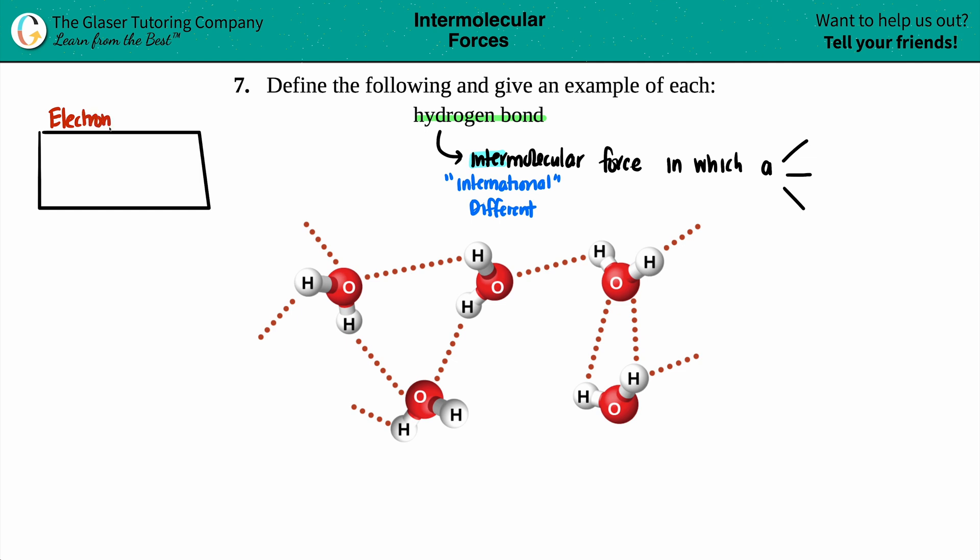Electronegativity: remember, as you go from left to right, your electronegativity is increasing. And as you go from top to bottom, your electronegativity is decreasing. This is a very, very, very polar bond. We're dealing with only the most electronegative elements on the periodic table, and that's found in the upper right-hand corner.